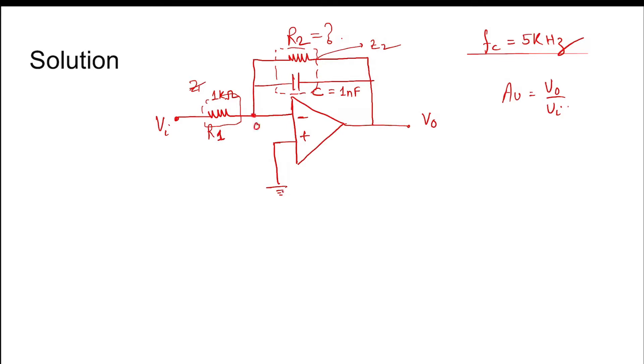Since this is also grounded, this should be zero. Vi minus zero by R1 equals this current, which equals this current, because nothing will go in here because the op-amp has infinite input impedance. So V0 minus zero, minus V0 divided by Z2. V0 by R1, we can write as Z1.